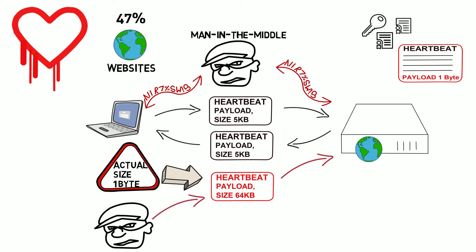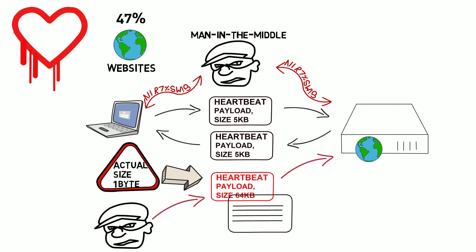the Heartbeat code in OpenSSL trusts the value of the heartbeat size as defined, which is 64 kilobytes. In order to return a heartbeat of the same size, the OpenSSL Heartbeat function copies sensitive information stored in memory to fill up the 64 kilobytes. This information includes the private keys from X509 certificates and usernames and passwords, which is then returned back to the attacker.